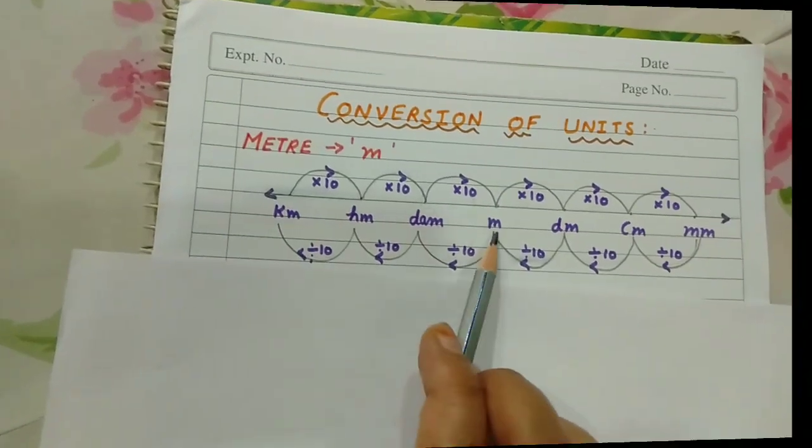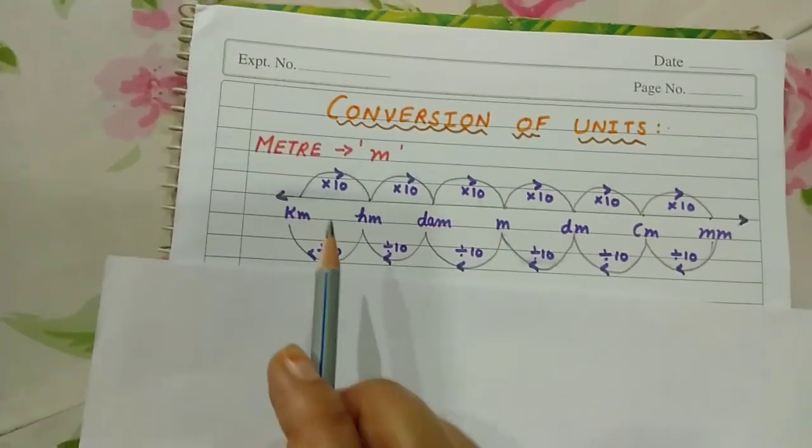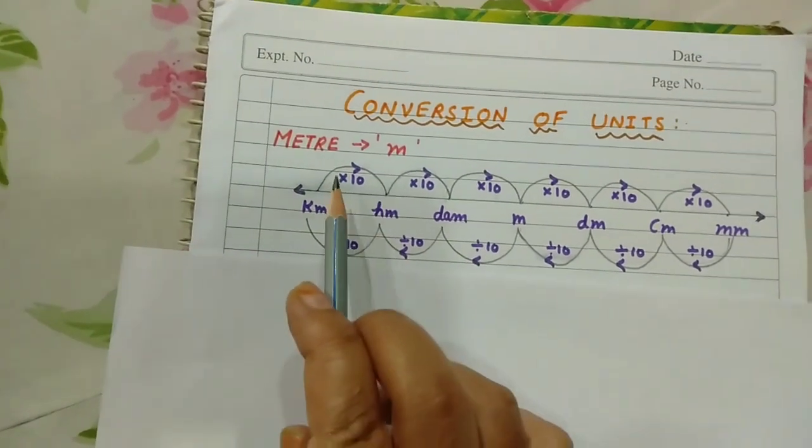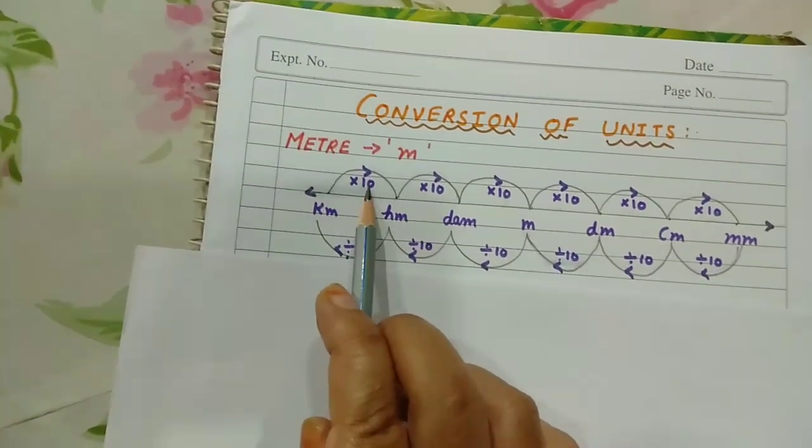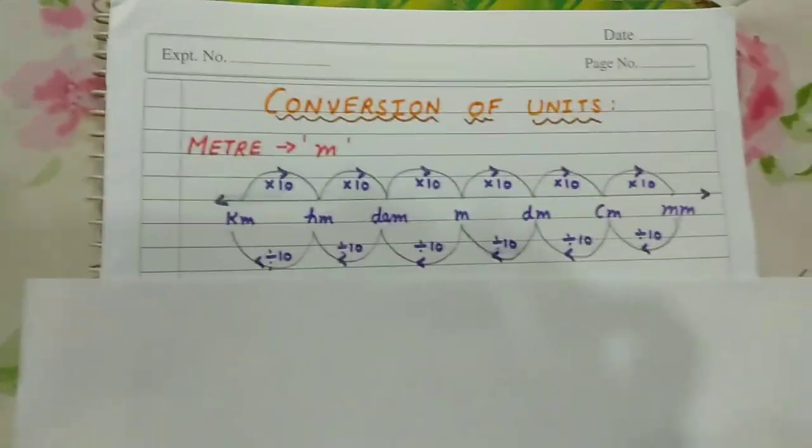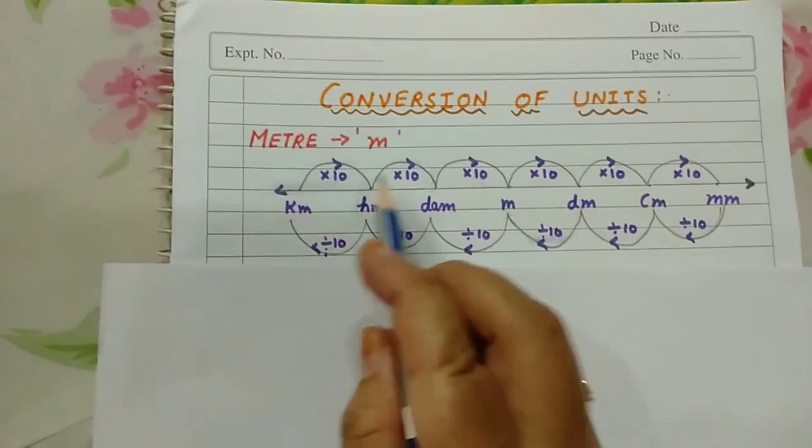As we go from left to right, you can see suppose if you have to convert kilometer to hectometer, what you have to multiply by is 10. If you convert kilometer to decameter, you multiply by 10 into 10, which is 100. Kilometer to meter is 10 into 10 into 10, which means 1000.